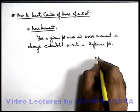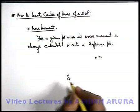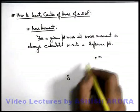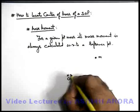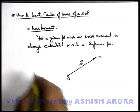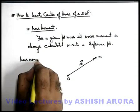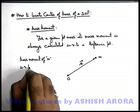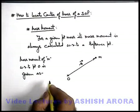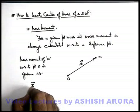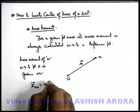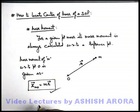For example, we are given with a point mass m, and say there is a reference point o in the system, which is generally the origin of the coordinate system associated. We are required to find the mass moment of this mass with respect to the reference point. To calculate mass moment, we first draw the position vector of this mass with respect to the reference point — say this position vector is r. By definition, mass moment of m with respect to point o is denoted as z, and it is given by the product of mass and the position vector of mass with respect to the reference point.